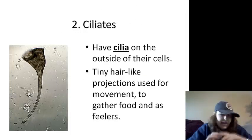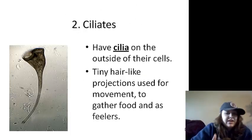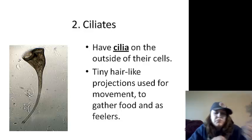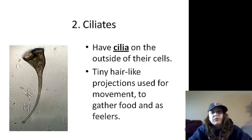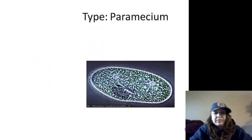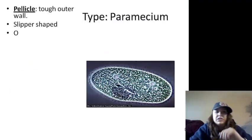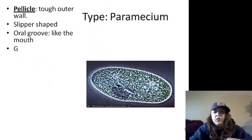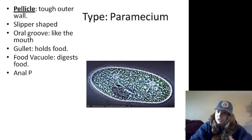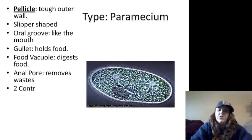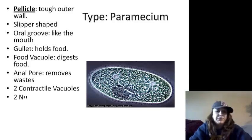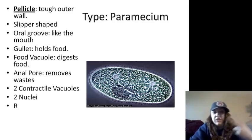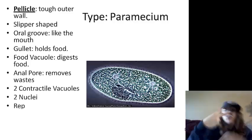Next: ciliates. They have cilia — tiny hair-like structures used for movement, gathering food, or as feelers to check out what's around them. Paramecium: tough outer wall, flipper-like shape, oral groove, a gullet which holds food, food vacuoles for digestion, an anal pore that removes waste, two contractile vacuoles, and two nuclei.